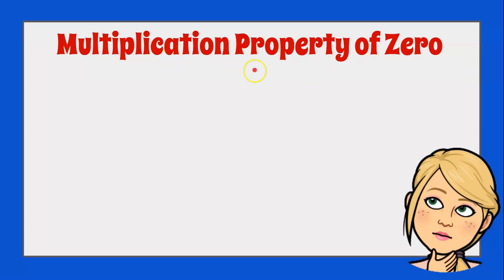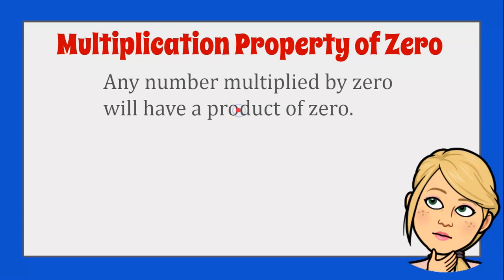The multiplication property of 0 is really important to understand. It states that any number multiplied by 0 will have a product of 0. So if you see 0 in a multiplication fact, you instantly know that the product will be 0. Any number multiplied by 0 equals 0. Let's replace n, which stands for any number, with a value. Let's use 4. 4 times 0 is 0.